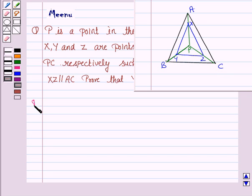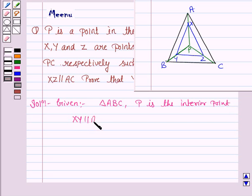So, let's now move on to the solution. Let's first write what is given to us. A triangle ABC, P is the interior point, XY is parallel to AB and XZ is parallel to AC.